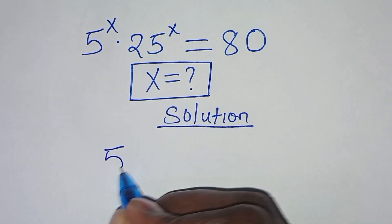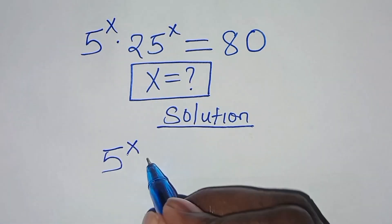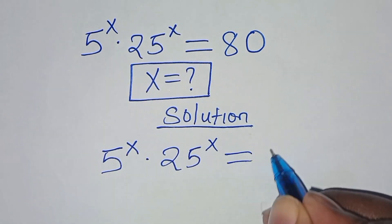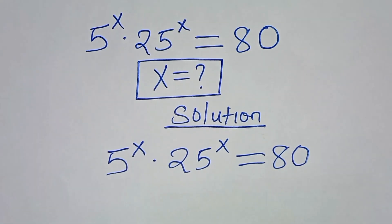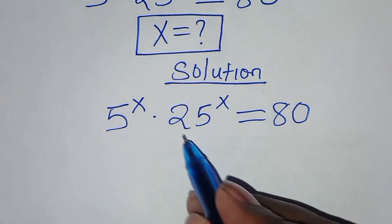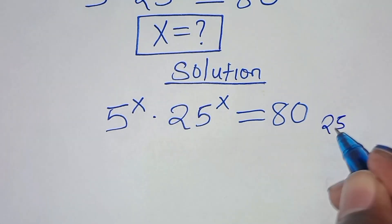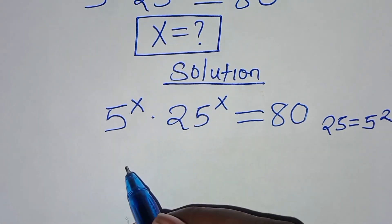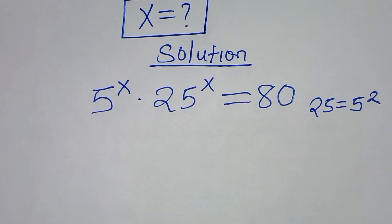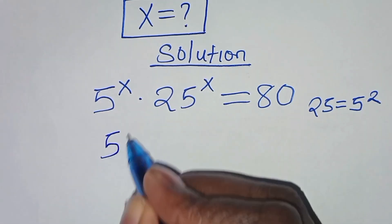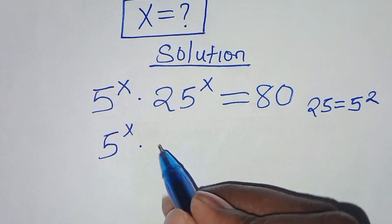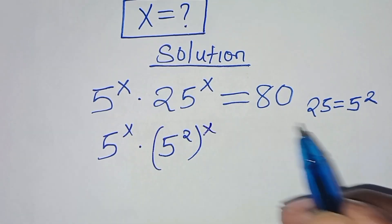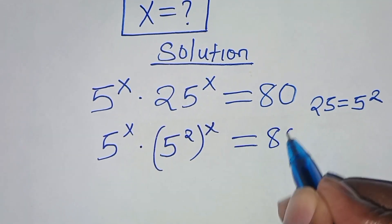We have 5 to the power x times 25 to the power x, which is equal to 80. The next step is that we can express 25 as 5 to the power 2. So this implies here we have 5 to the power x times 5 to the power 2, raised to power x. This is equal to 80.